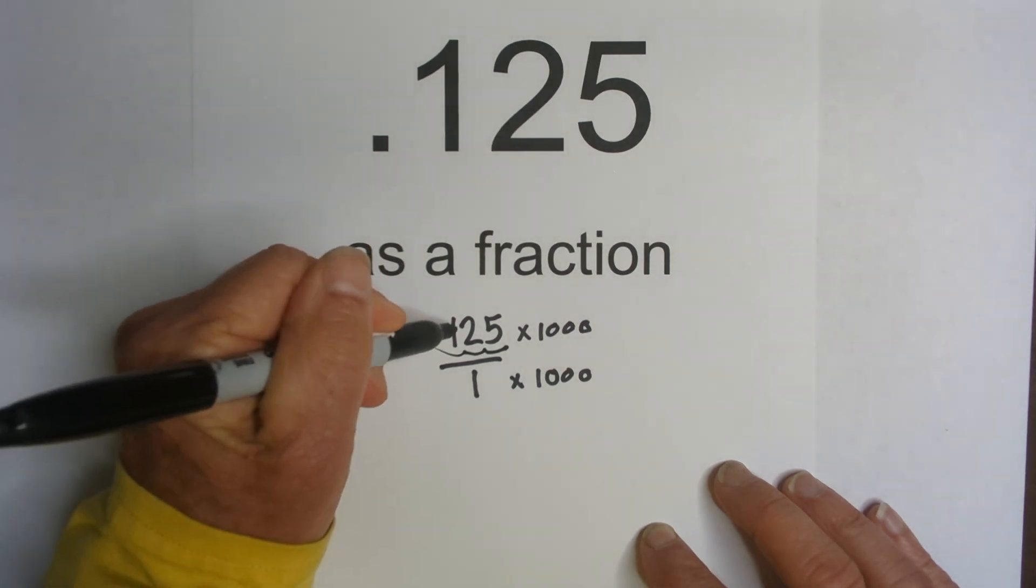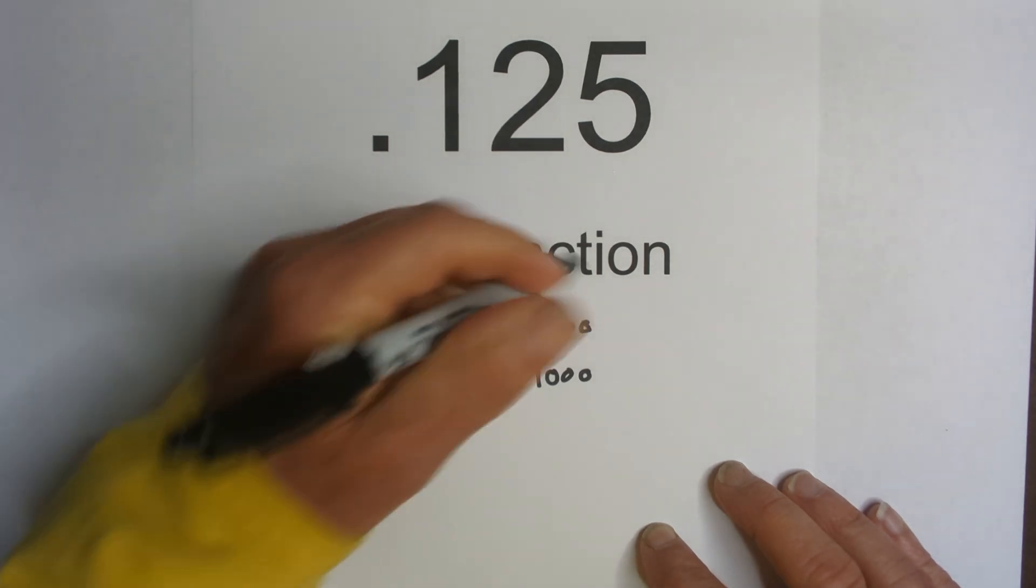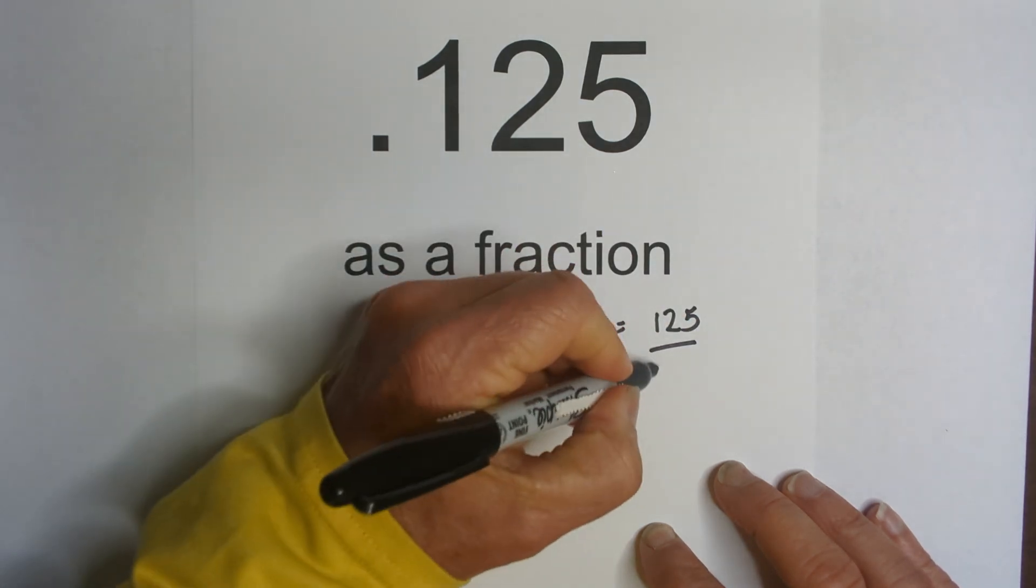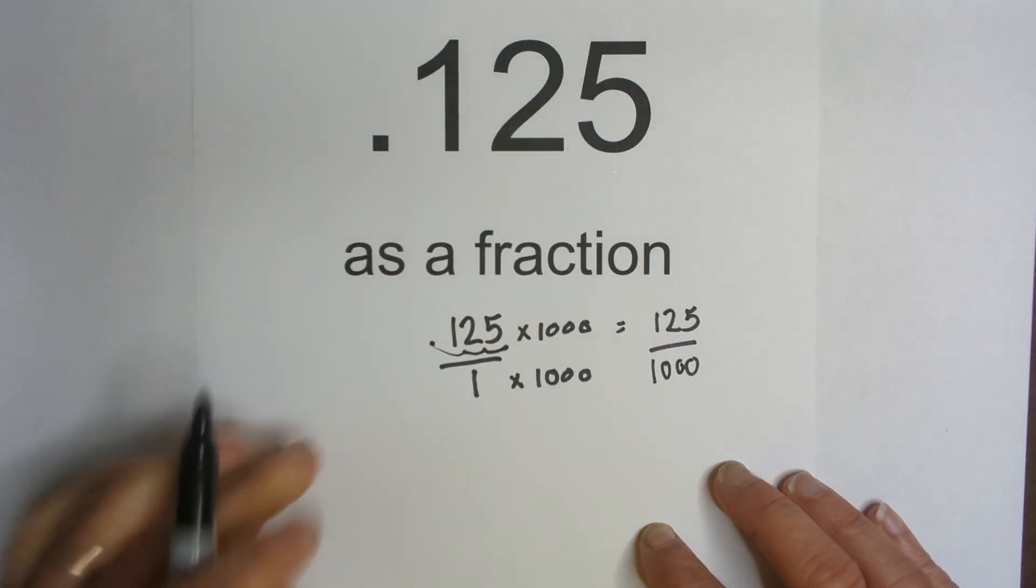So when I multiply 125 thousandths by 1,000, that gives me 125. And then 1 times 1,000 is 1,000.